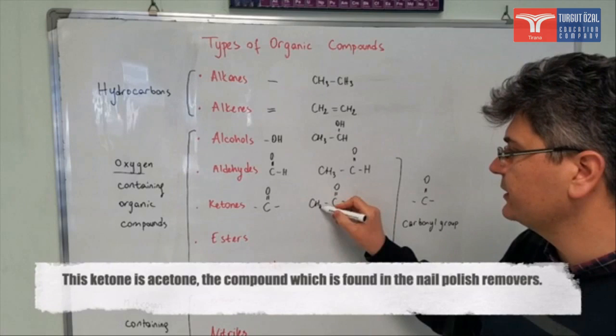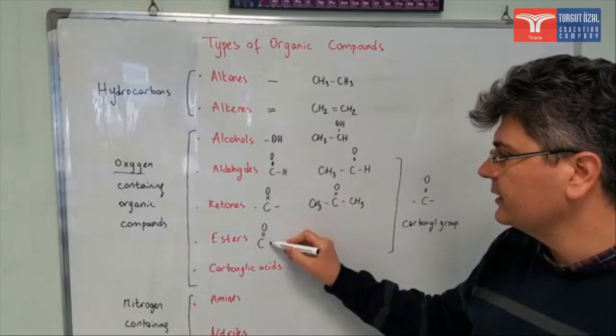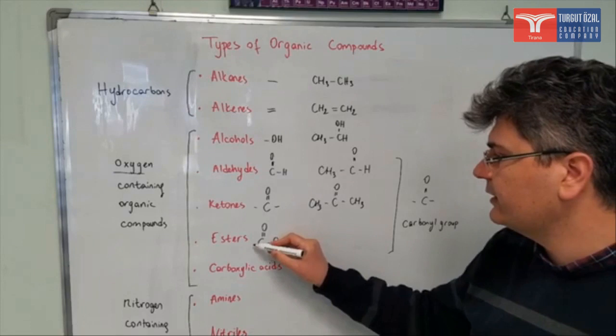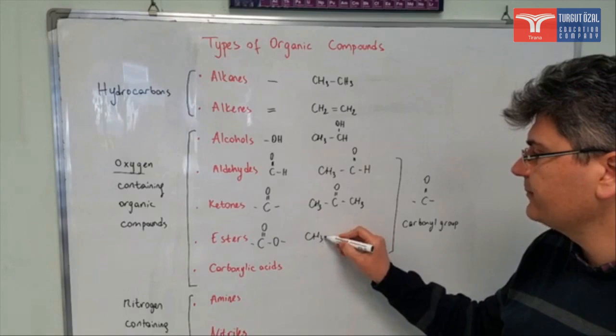Esters contain the carbonyl group as well. But along with that we need to have an oxygen, and this oxygen is connected to a radical, and this carbon is also connected to a radical. So it can be something like this.